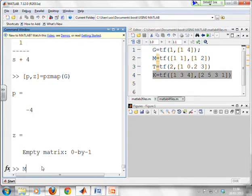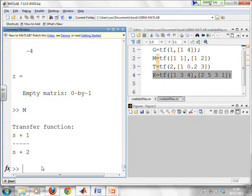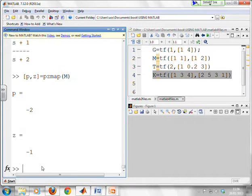Alternatively, I could have looked at M. So there's M. So I could do p comma z equals pzmap of M. And here, what do you notice? I've got a pole at minus two from the S plus two, and a zero at minus one from the S plus one.